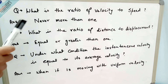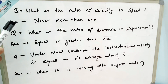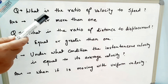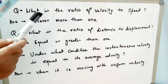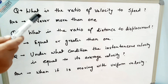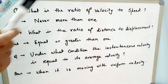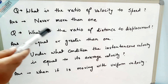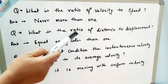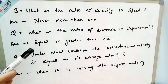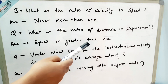Here are some conceptual questions related to velocity and speed. First: what is the ratio of velocity to speed? The answer is it will never be more than 1 — it will always be less than or equal to 1. Second: what is the ratio of distance to displacement? The answer is it will be equal to or greater than 1.